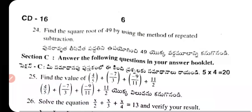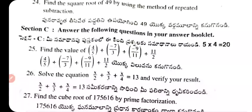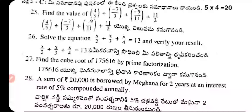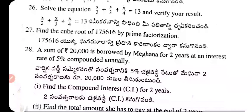Question 24: Find the square root of 49 using the method of repeated subtraction. Question 25: Find the value of 4/5 + (−7/3) + (−9/11) + 11/2.